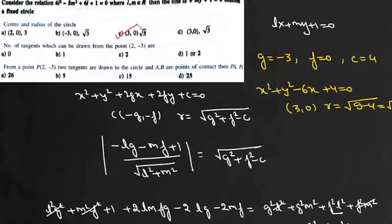The second one is number of tangents which can be drawn from the point (2, -3). We will find s₁. So there will be 4 + 9 - 12 + 4, which is 5, which is positive. This point lies outside, so two tangents can be drawn. Answer to the second question is option c.